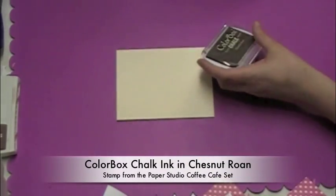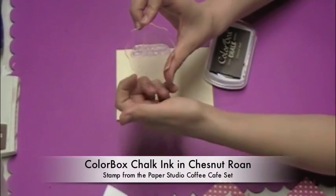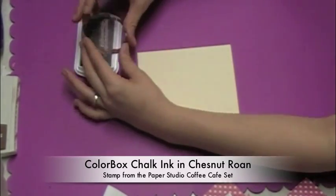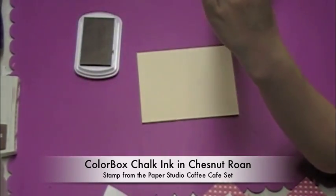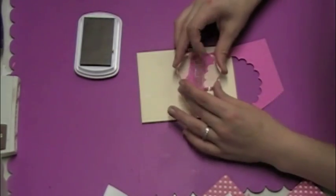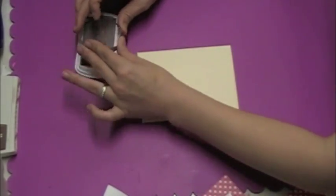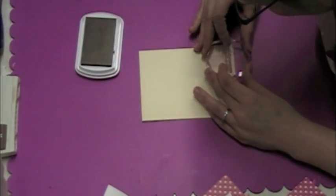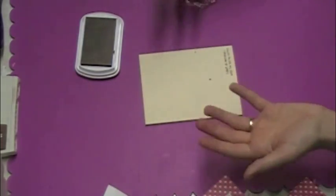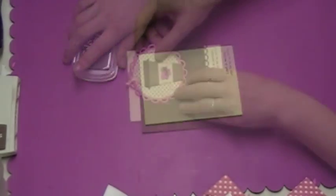Now I'm going to take some Color Box Fluid Chalk ink in Chestnut Rhone. I have this really cute stamp by the paper studio and the set is called Coffee Cafe. And the stamp I'm using says I don't do mornings until I've had my coffee. So there I'm just stamping on a scrap piece to make sure my image is coming out the way I like. And then I stamp it down on my card and realized I got that Fluid Chalk ink on my fingers and on my card.